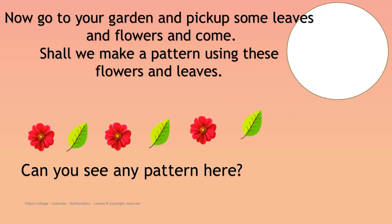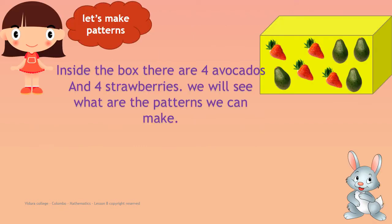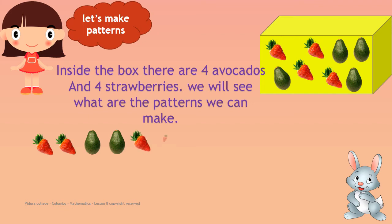Can you see any pattern here? Now this example is a little bit different from the others. Here we have four avocados and four strawberries, and we have to make a different pattern. Look at the first example: I am going to keep two strawberries in a line, next two avocados, again two strawberries. Now tell me what comes next? Yes, two avocados.